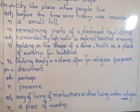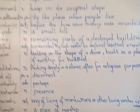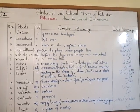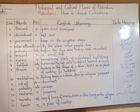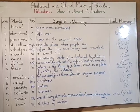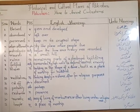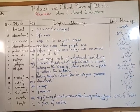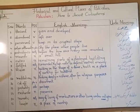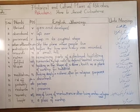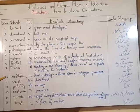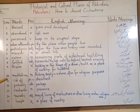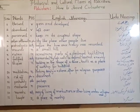As you can see, there are fifteen words altogether. You have already done word spinning in your copy in the first term. First you will make the title page, then draw five columns: one for serial number, one for the words, one for part of speech, one for English meaning, and one for Urdu meanings.